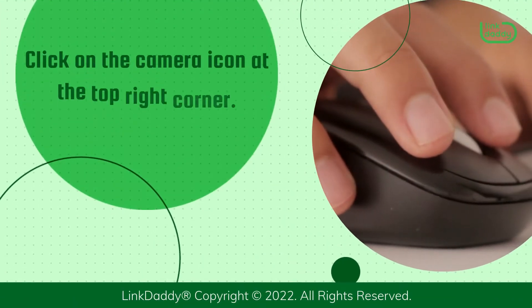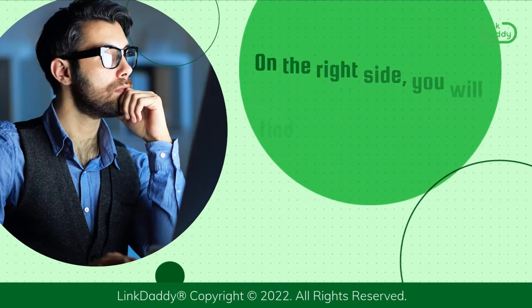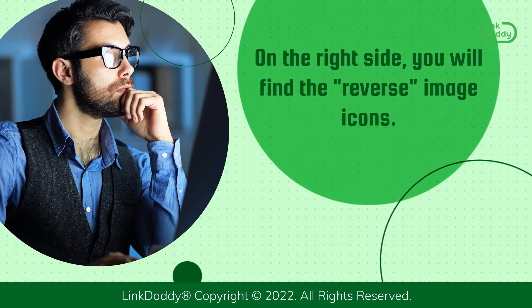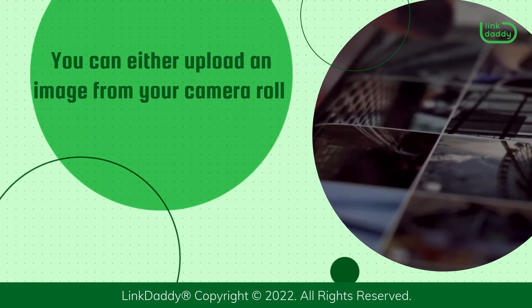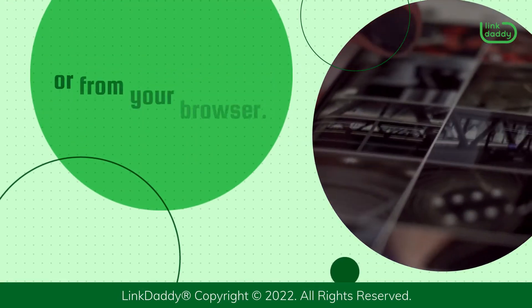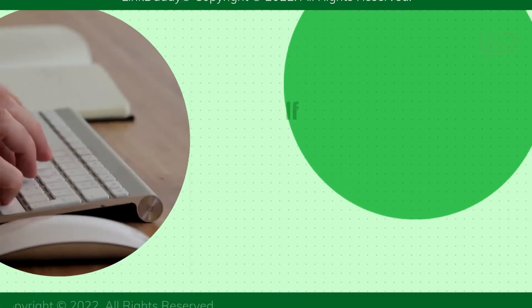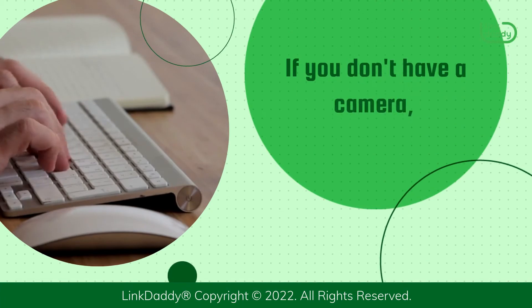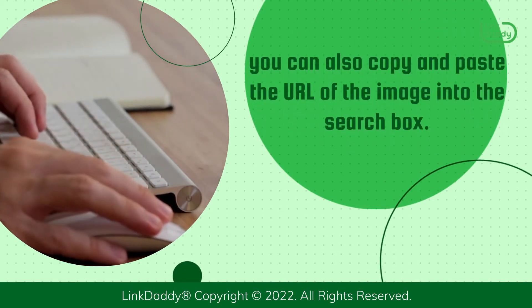Click on the camera icon at the top right corner. On the right side, you will find the reverse image icons. You can either upload an image from your camera roll or from your browser. If you don't have a camera, you can also copy and paste the URL of the image into the search box.